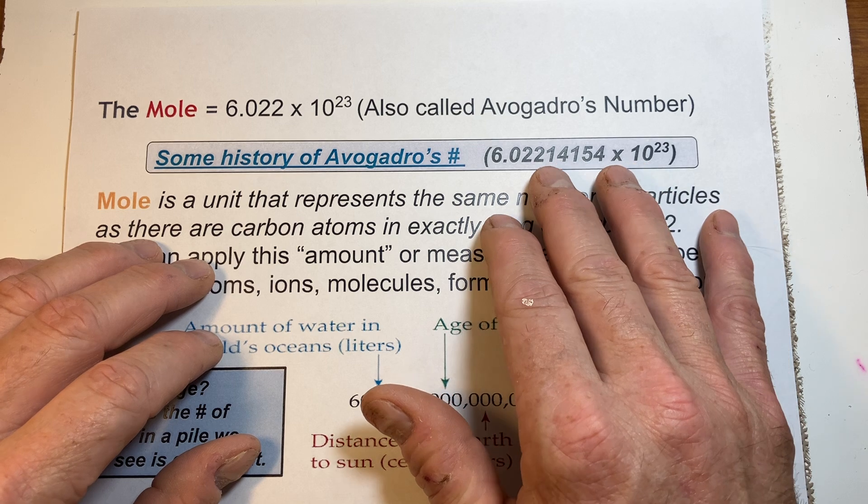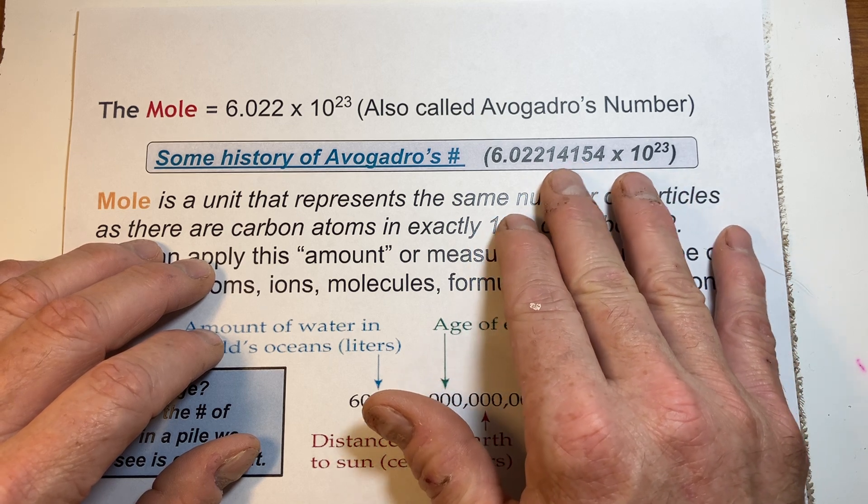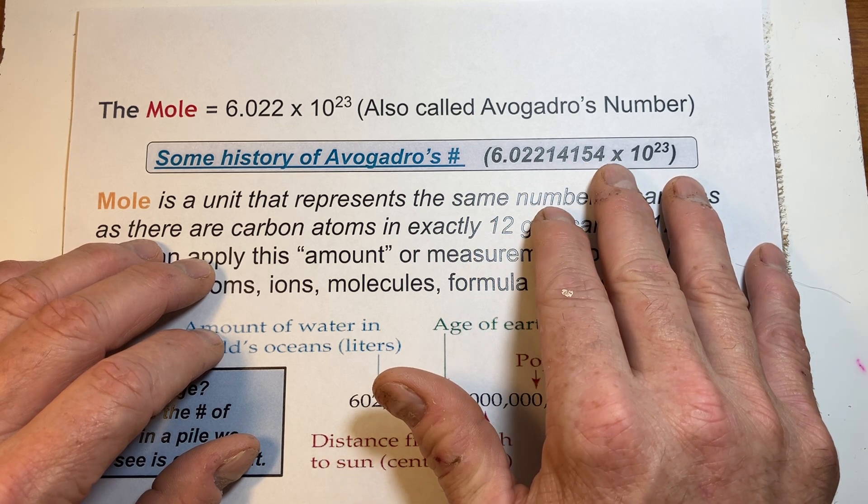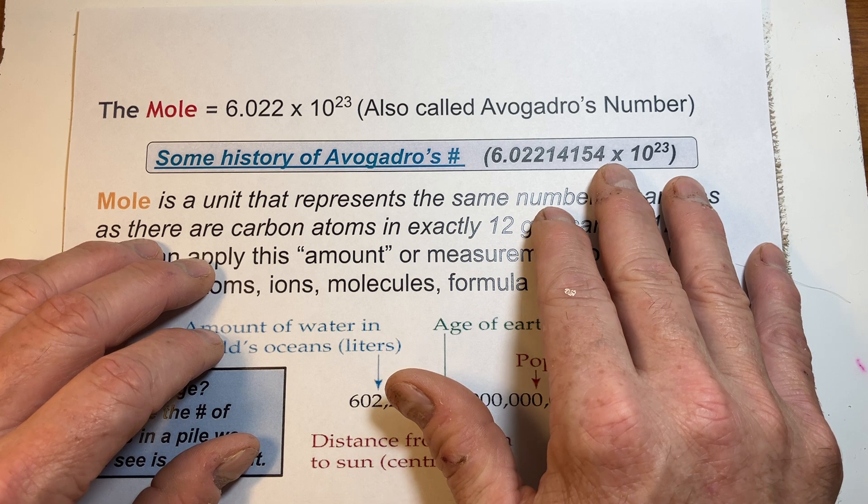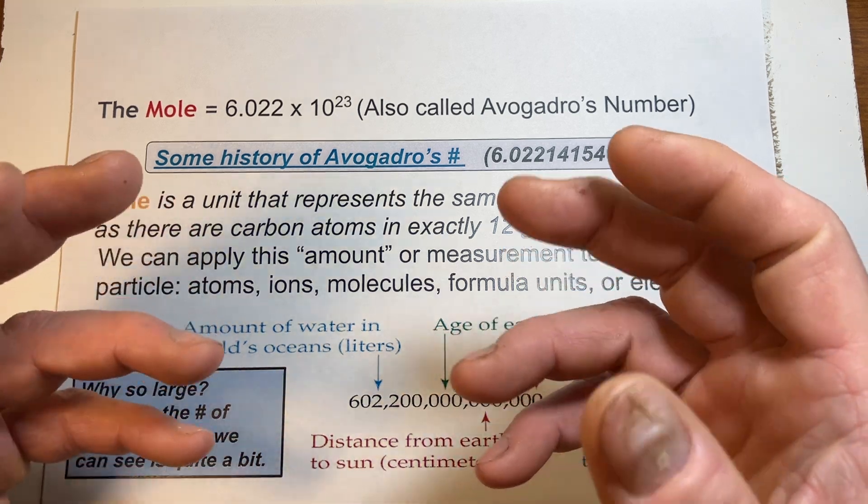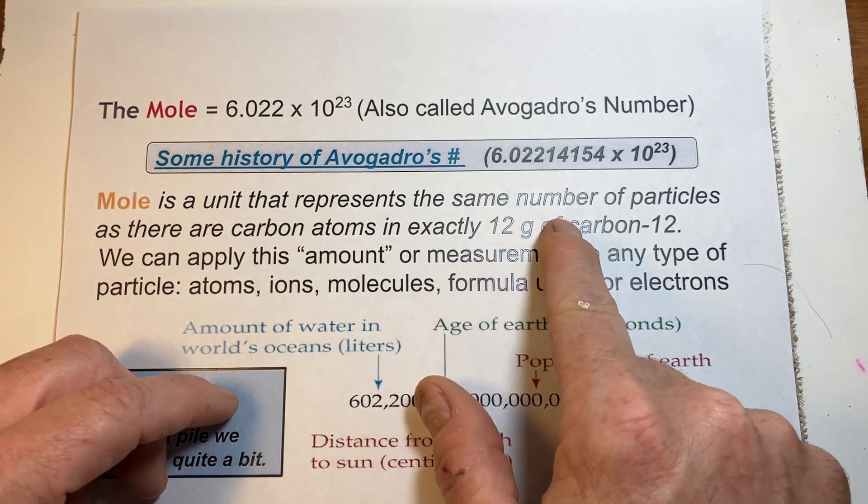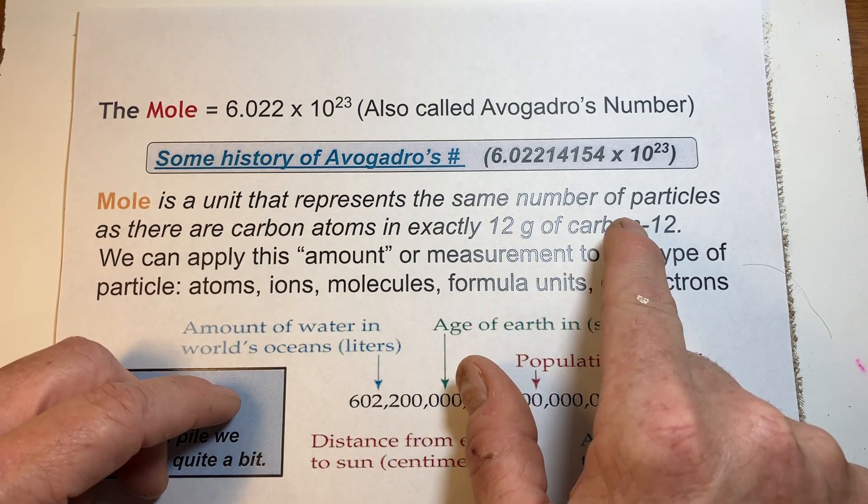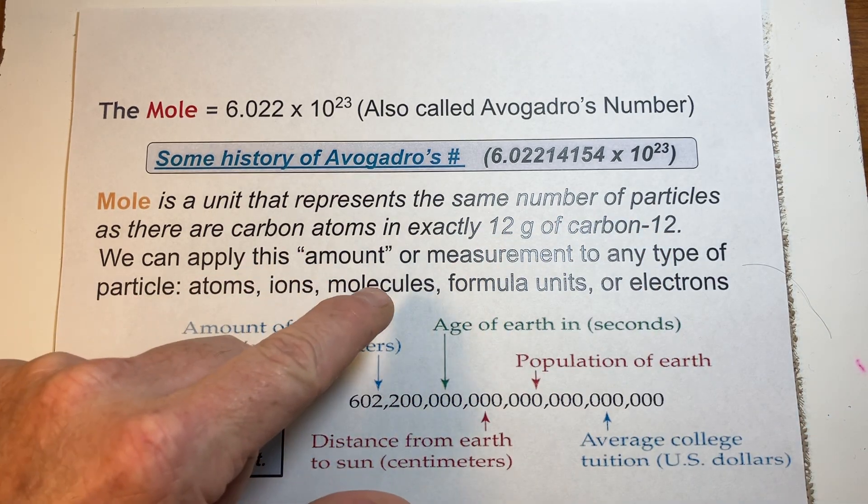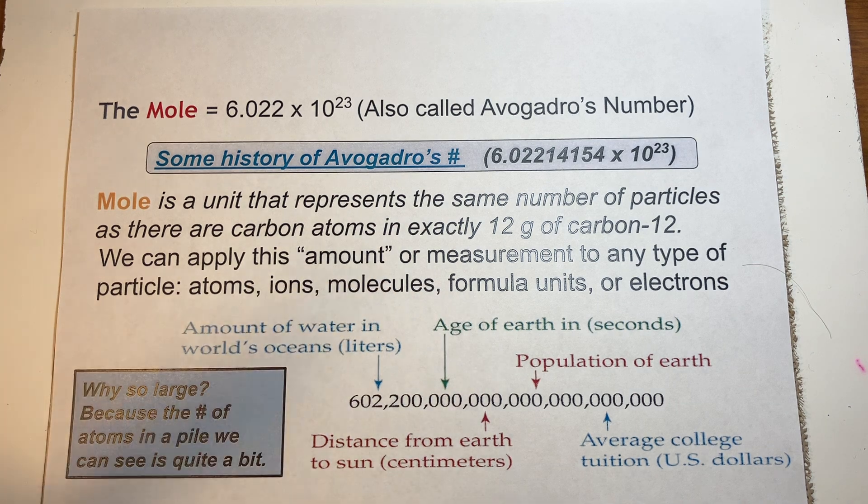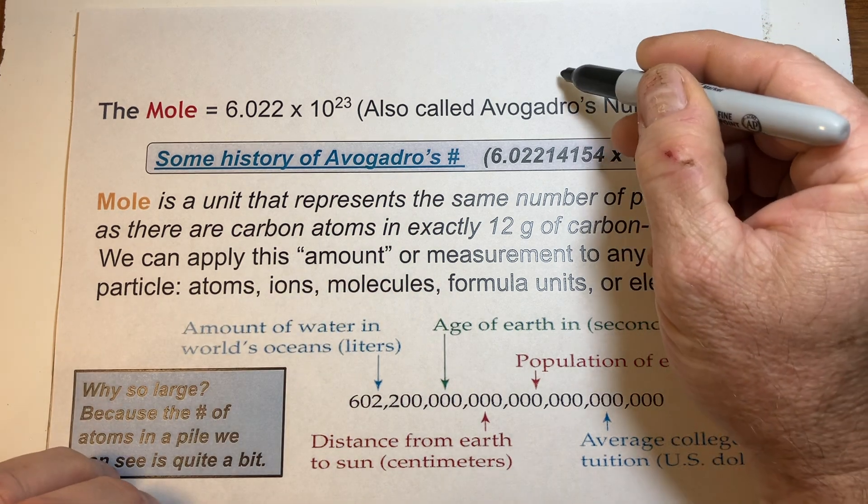Currently, the number is known to be more precise now, going seven to eight digits past the decimal point. And again, it's a unit. It's a set number. A set number represents the same number of particles as there are carbon atoms in exactly twelve grams of carbon twelve.